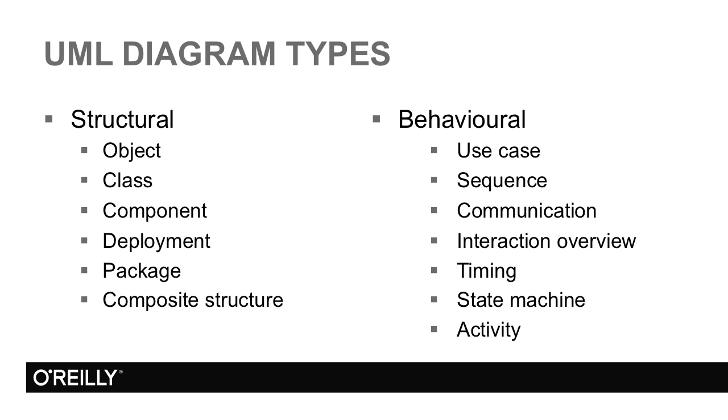The behavioral diagrams show the aspects of the system that reflect behaviors that are executed usually in response to occurrences of events. They are use case, sequence, communication, interaction overview, timing, state machine and activity diagrams.